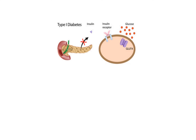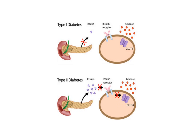The two most commonly encountered types of diabetes are type 1, in which insulin producing cells are destroyed, thus eliminating insulin production, and type 2, in which there is insulin resistance and gradual insulin deficiency.